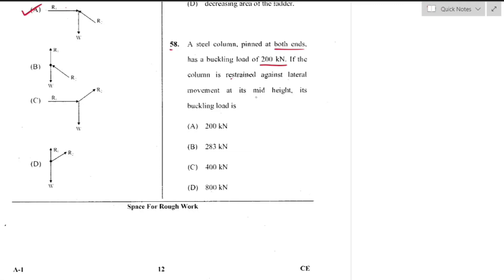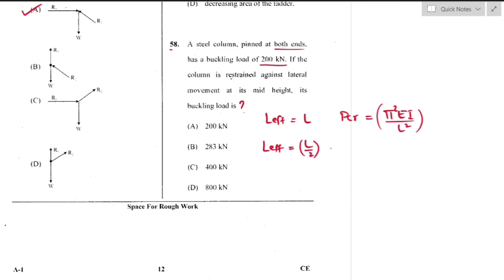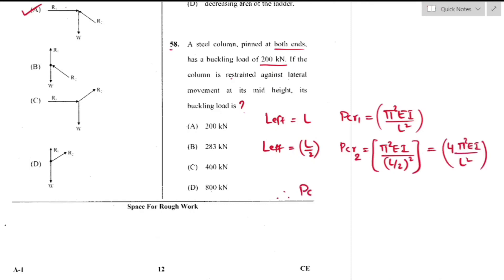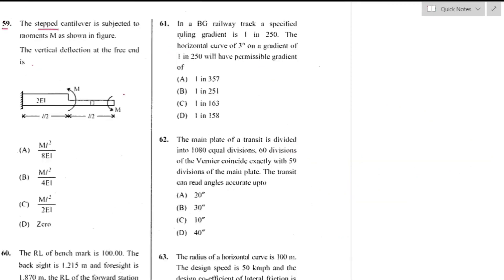Question number 58: A steel column pinned at both ends has a buckling load of 200 kN. When the column is pinned at both ends, effective length = L, giving buckling load = π²EI/L². When restrained against lateral movement at mid-height, effective length = L/2, so buckling load = π²EI/(L/2)² = 4 × 200 = 800 kN — option D is the right answer.